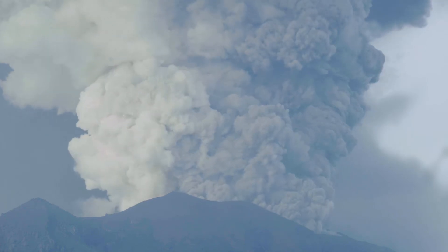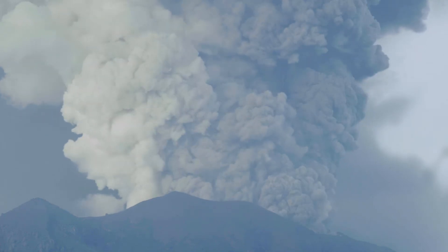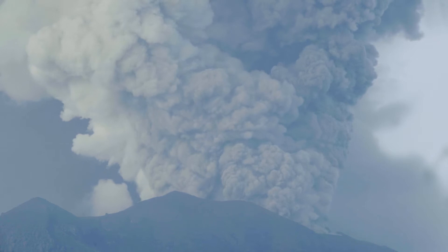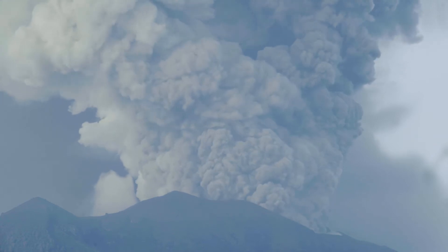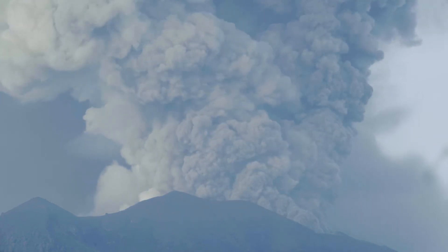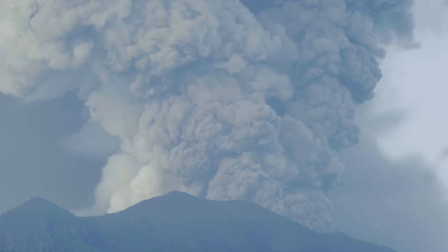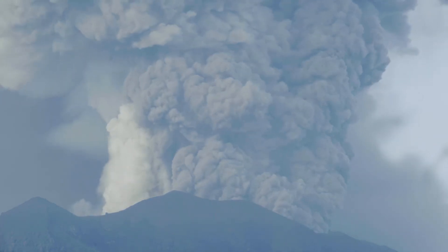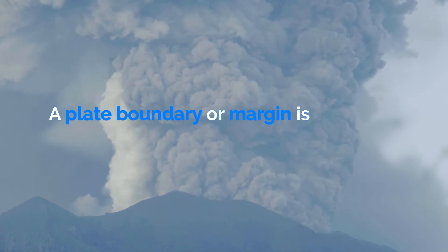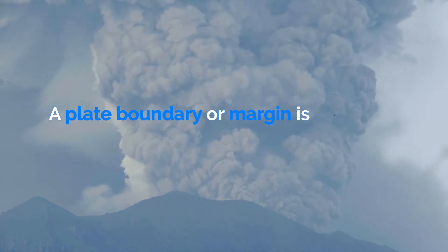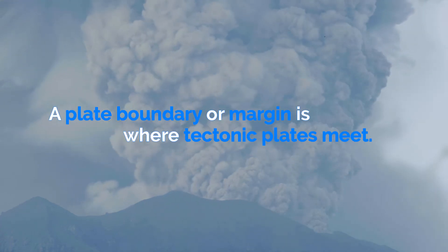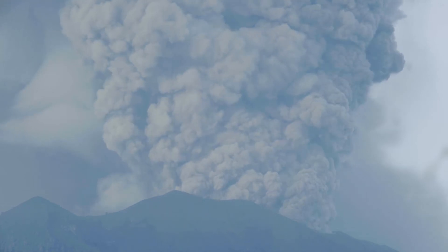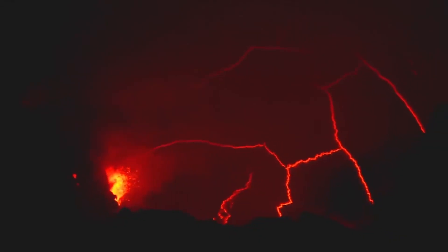As covered previously, the earth's crust is broken up into pieces called tectonic plates. Where these plates meet is very important and what this video is all about. A plate boundary, also known as a plate margin, is where two or more tectonic plates meet, and there are three different types.